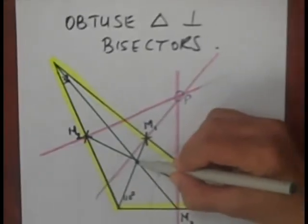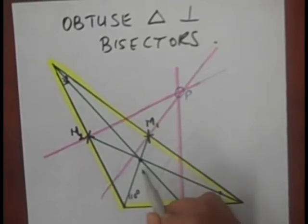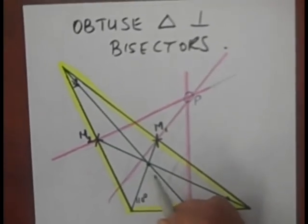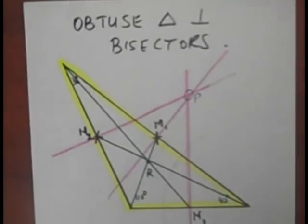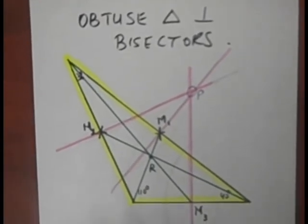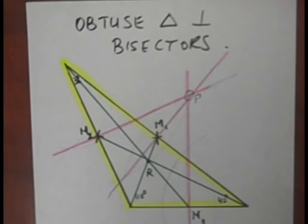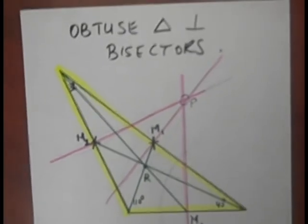They all intersect in one point inside the circle. I'm going to call this point R because I can. And then I'll write my conclusion about medians. Just so you know, the yellow highlights the triangle, the pink highlights the perpendicular bisectors, and the green segments are the medians.